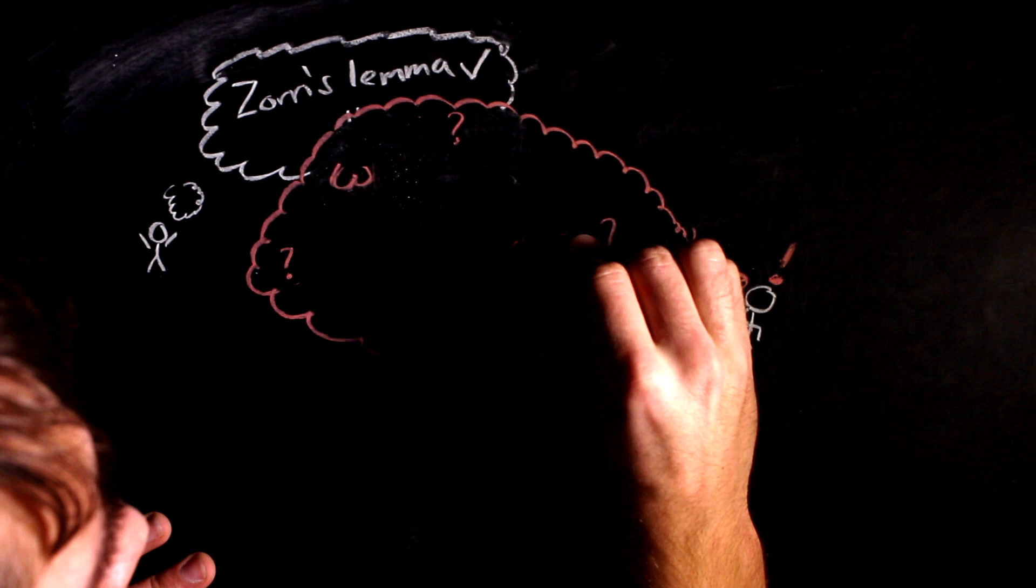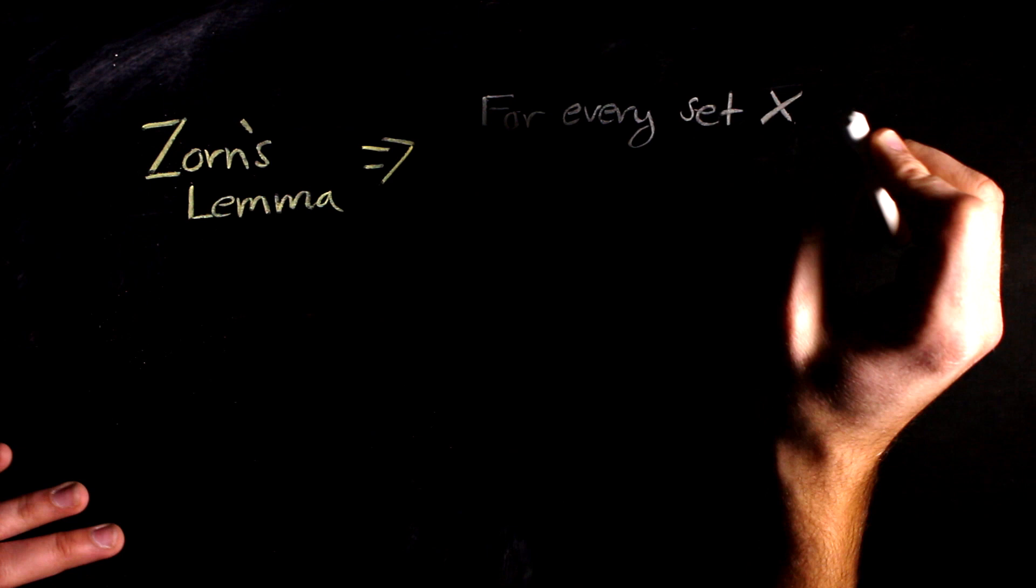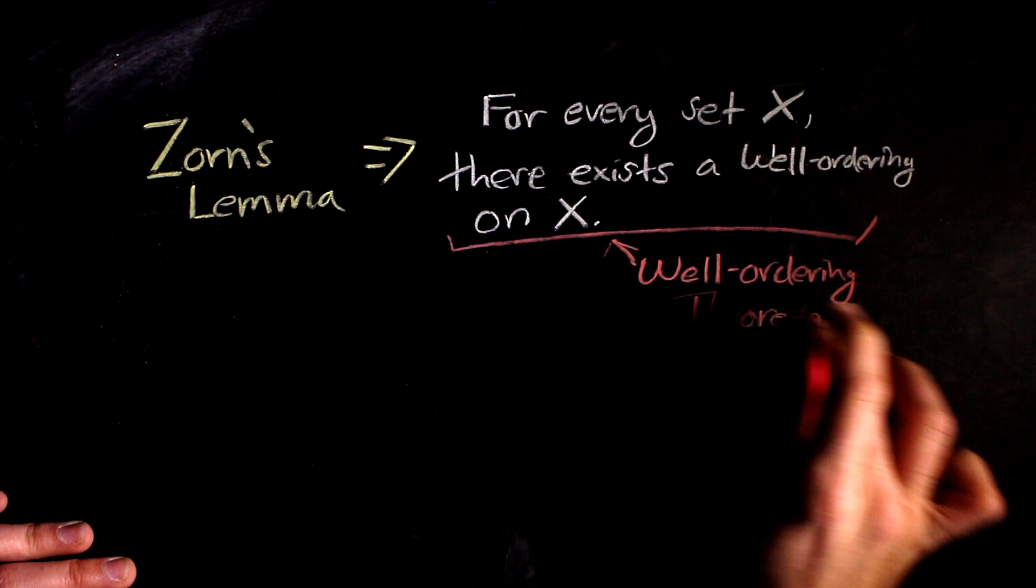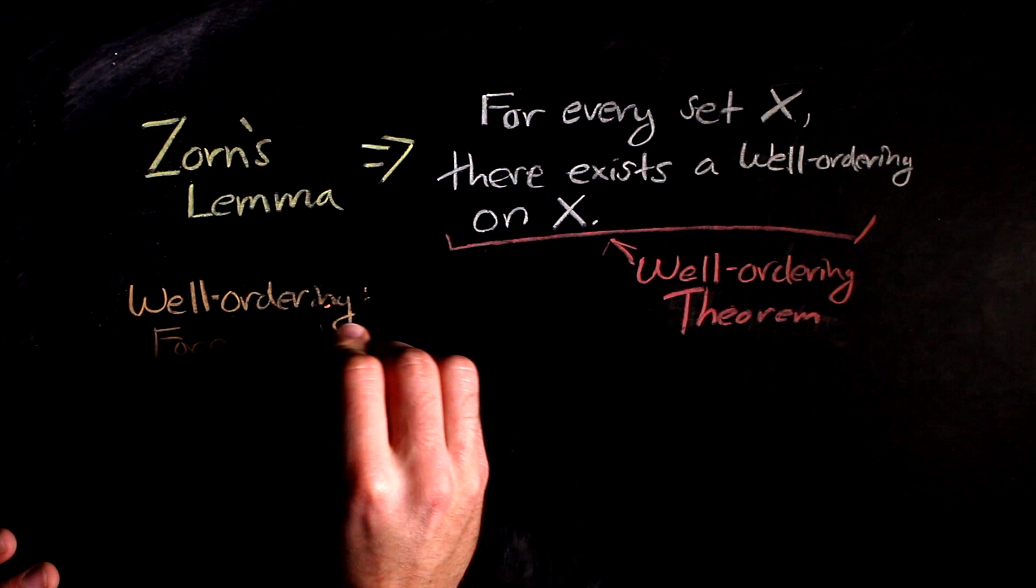However, the mental stretch of Zorn's lemma doesn't end here. Zorn's lemma can be used to show the following theorem. For every set X, there exists a well-ordering on X. This is otherwise known as the well-ordering theorem. It seems like a simple statement, but it's incredibly hard to think about for sets with lots of stuff in them. Remember that a well-ordering means that every subset of your set X has a least element.